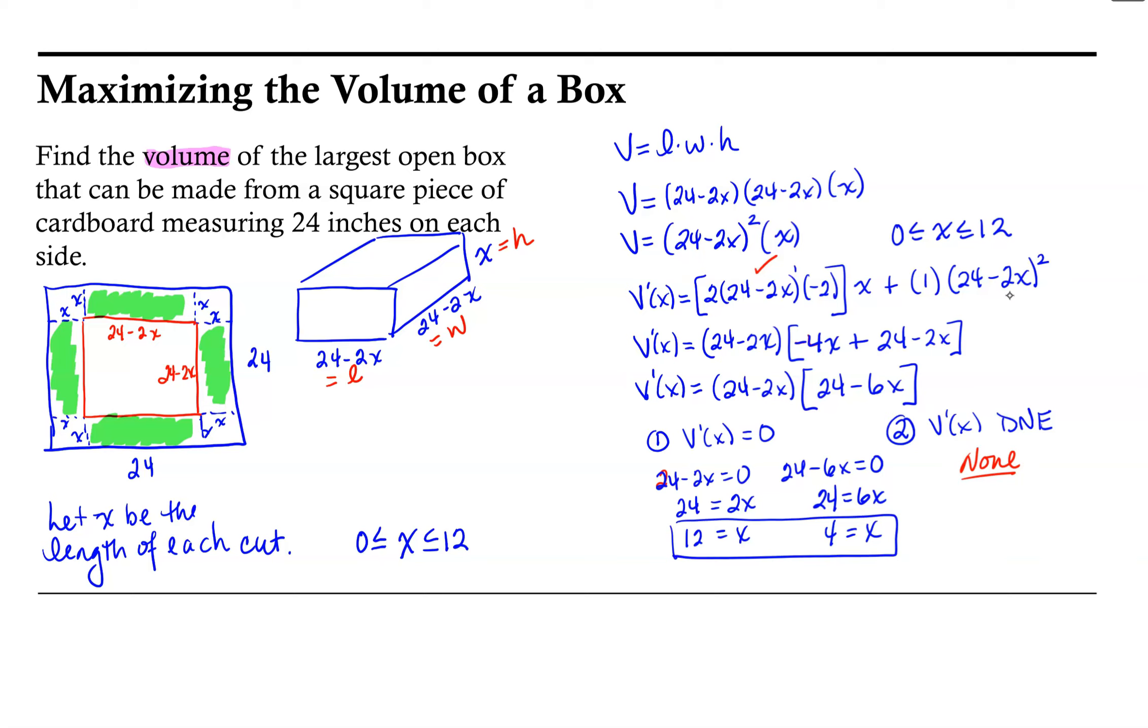Now we need to know whether we have maximized our volume. Notice that one of our critical points corresponds to the endpoint of our domain. So we can use our strategies for finding absolute extrema. Notice we're maximizing on an interval, and we have a critical point that lies within that interval. So all that is necessary is for us to look at the volume at the endpoints of the interval, as well as the volume for any critical points that lie within the interval. So there's three volumes we need to check.